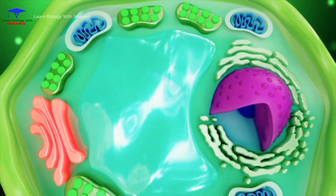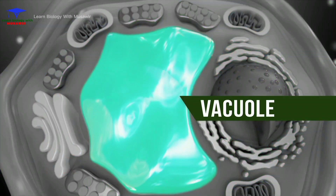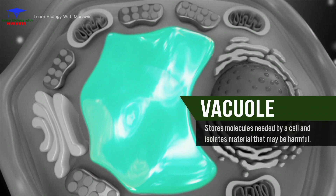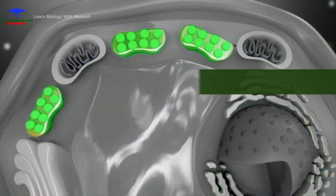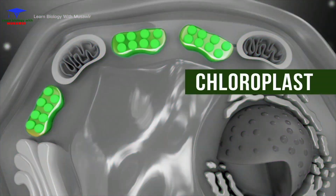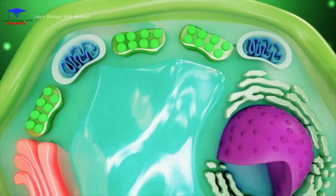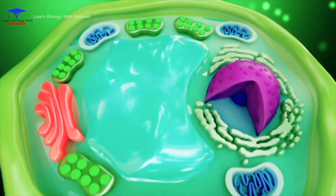Secondly, there is often just one large central vacuole found in plant cells, whereas animal cells have a few small ones. The vacuole stores molecules needed by a cell and also isolates materials that may be harmful to the cell. The final difference is that plant cells have an additional organelle called a chloroplast, which is the site of photosynthesis in a plant cell.